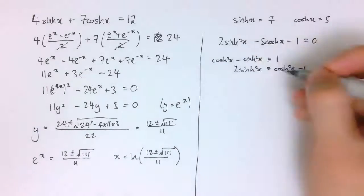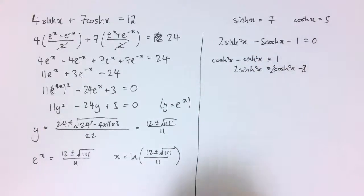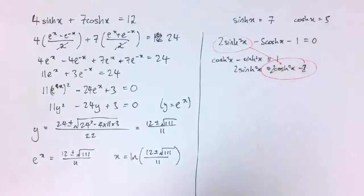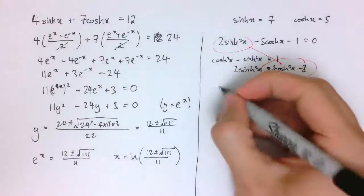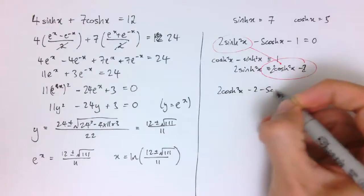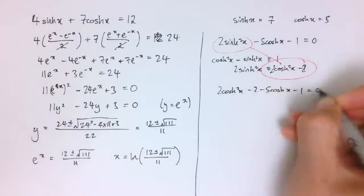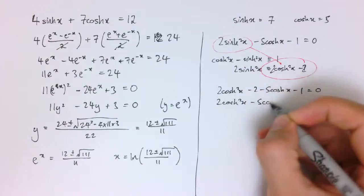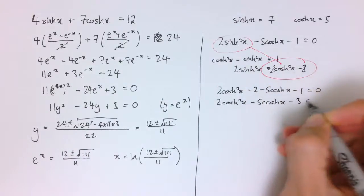So 2sinh²(x) is 2cosh²(x) minus 2. So if I replace that 2sinh²(x) with 2cosh²(x) minus 2 we'll get 2cosh²(x) minus 2 minus 5cosh(x) minus 1 equals 0. So that's 2cosh²(x) minus 5cosh(x) minus 3 equals 0.